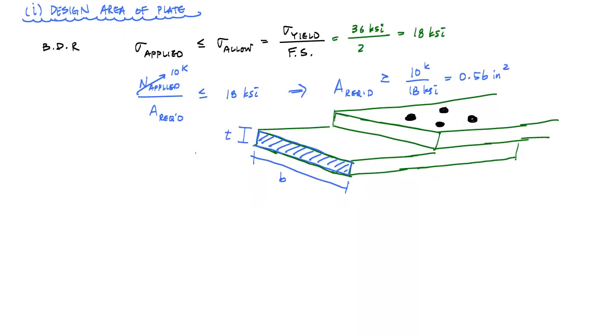So that means I've got to choose a thickness and a width, some T and B to satisfy this basic design relationship. And so if this plate is manufactured by thicknesses, so there's preset thicknesses, and I can cut it to any reasonable width, if I had a quarter-inch thick plate, all I got to do is substitute. The area of this plate would be B times T. And I want this to be greater than or equal to 0.56 inches squared. T is a quarter-inch. Then I can solve for B,